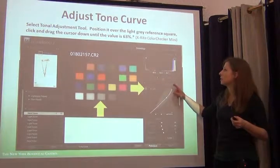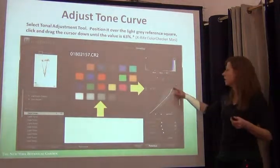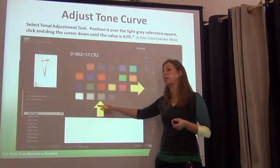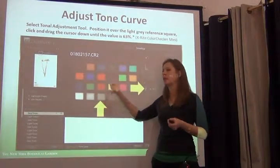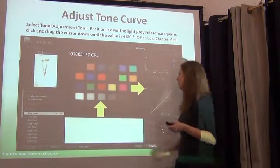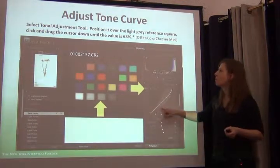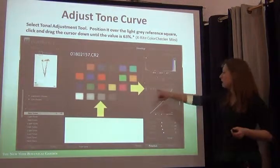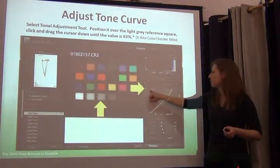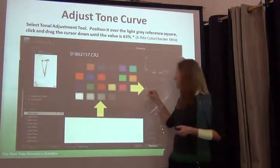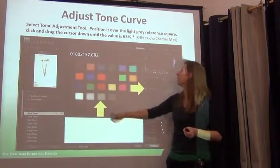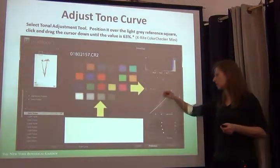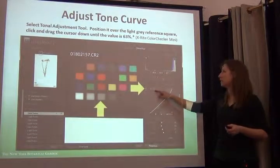Next step: select the tonal adjustment tool — this is kind of the fun part. Once you've selected it, you drag it over here, click, hold, and pull — click the mouse, hold it down and move it back and forth. As you do so you see the curve change a little bit. What I want to do is match the value I see here. This is the original value, this is my new value. I want the value for this square on the right side to equal 63%. Right now it's at 74, so I click, hold, and drag it down until I see 63.